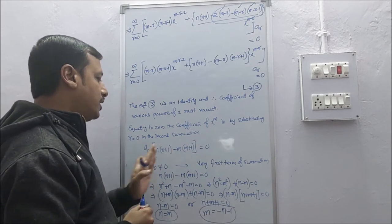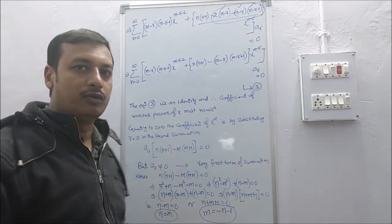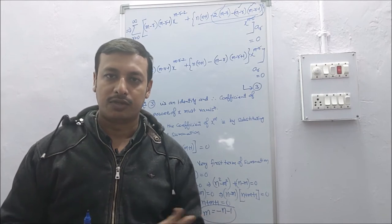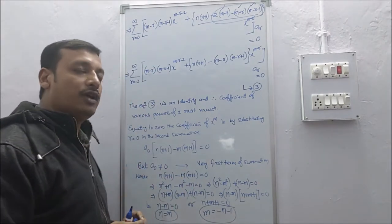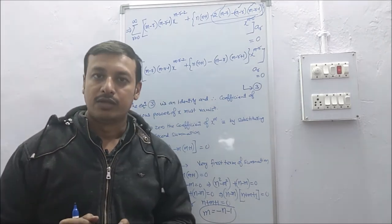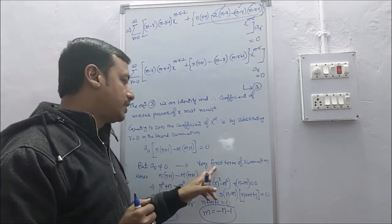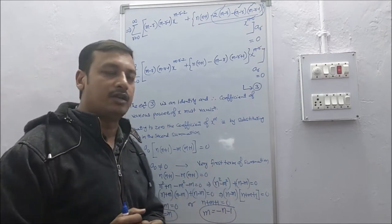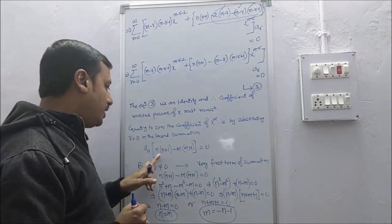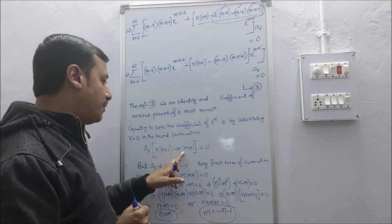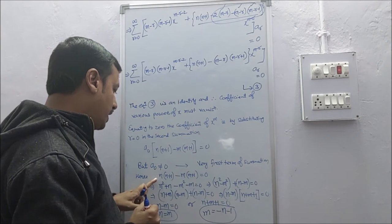Since there is a product of two terms equal to zero, either term must be zero. Since a₀ is the very first term of the summation, a₀ cannot be equal to 0. So we are left with n(n+1) minus m(m+1) equals 0, which gives n² + n − m² − m = 0. Rearranging: (n² − m²) + (n − m) = 0.